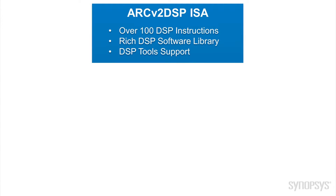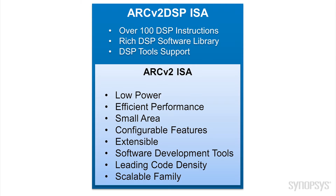The EM DSP processors are built on the Arc-V2 DSP instruction set architecture, which adds over 100 optimized DSP instructions to the area and code-efficient Arc-V2 RISC ISA. The EM DSP processors combine efficient, real-time control with the DSP performance required for ultra-low power, always-on devices.